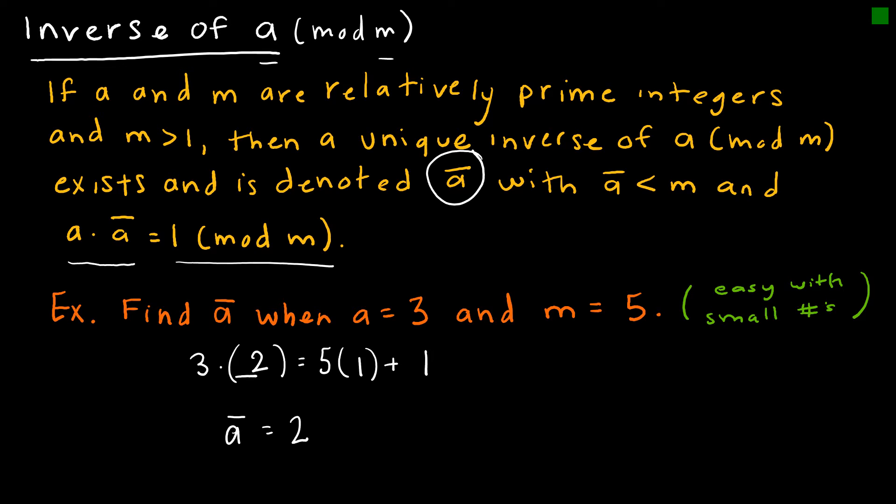I could have also done that with a different number. So I could say 3 times what, and what if I said 5 times 2, plus 1? Well, 5 times 2 plus 1 is 11, and 3 doesn't go into 11, so that's not going to work. Let's say 3 times what equals 5 times 3 plus 1? Well, 5 times 3 is 15, plus 1 is 16, so that one's not going to work. I could look at 5 times 4, and 5 times 4 plus 1 is 20 plus 1, or 21, and that one does work, so 3 times 7. So I can also say that an inverse of A is 7, but just as we did before, what I'm looking for is that smallest one, because 7 and 2 are the same mod 5, or equivalent mod 5.